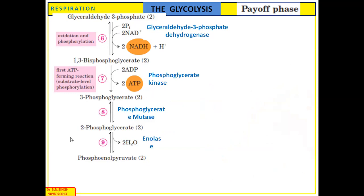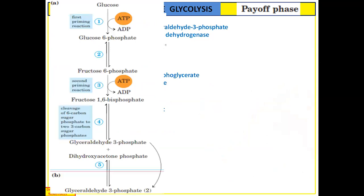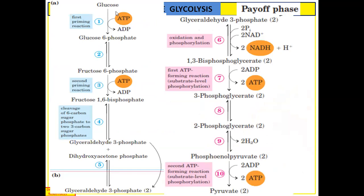The 2-phosphoglycerate undergoes dehydration and forms phosphoenolpyruvate. Phosphoenolpyruvate undergoes substrate-level phosphorylation via pyruvate kinase to form two molecules of pyruvic acid. In this way, from one single glucose molecule, the synthesis of two molecules of pyruvic acid is carried out via the preparatory phase and payoff phase of glycolysis.